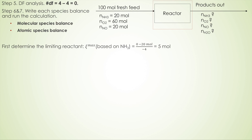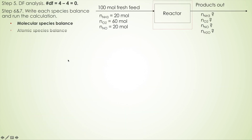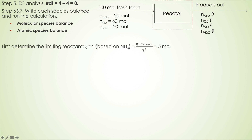From the last lecture, we talked about using the maximum extent of reaction, χ_max, to determine which one is the limiting reactant. Based on ammonia, we assume ammonia goes to completion, so its output is zero. Using χ_max, we calculate how much ammonia is used. The final ammonia is zero and the input is 20 moles. Because ammonia is a reactant, the coefficient is negative, so divided by negative four, we get χ_max = 5 moles.